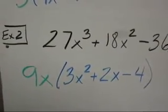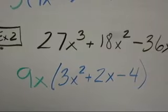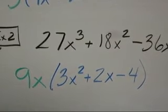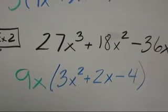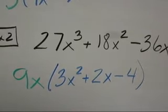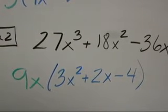Then I ask myself, what would I multiply 9x by to get to 27x cubed? Well, 9 times 3 is 27, and x times x squared is x cubed, so it must be 3x squared.